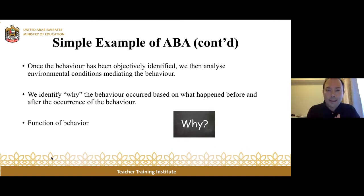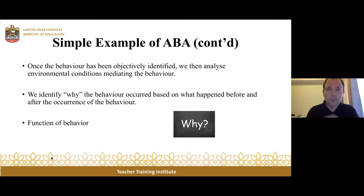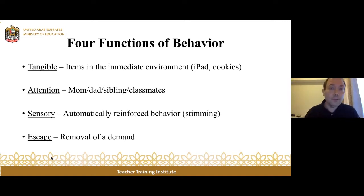Once we've identified the behavior in a very objective, specific manner — she flopped on the floor and cried — we want to take a look at the environment and identify why she did it. We want to identify the why of the behavior. That is called the function of behavior. Why is this particular behavior occurring? Before we get back to this example, let me focus on this element because I think it's an important one.